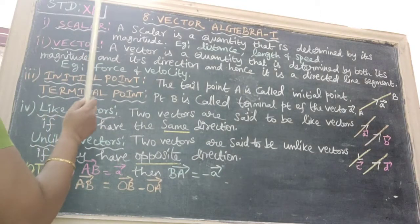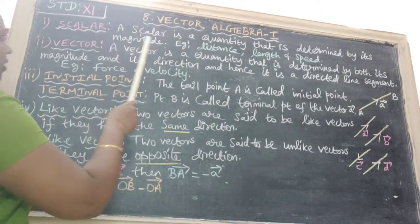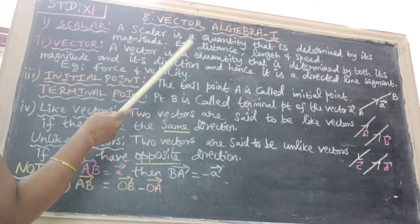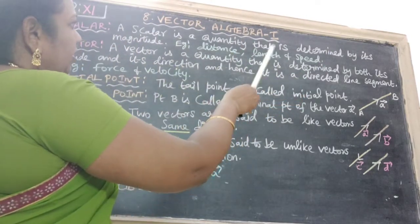First one is scalar. Already we know that the definition of scalar: a scalar is a quantity that is determined by its magnitude. For example, distance, length and speed.